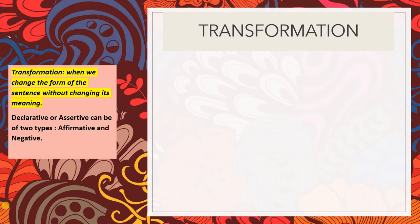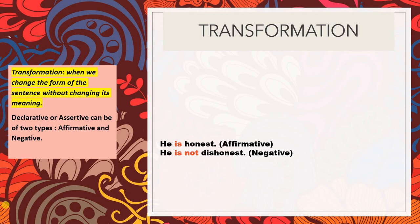We are looking at the declarative or assertive type, and in that we have affirmative and negative. When I say 'he is honest,' it is affirmative. When I change it to 'he is not dishonest,' it becomes negative. Note that there is no change of meaning — the meaning remains the same. It is only the affirmative or negative type that changes.